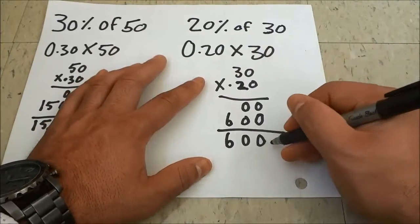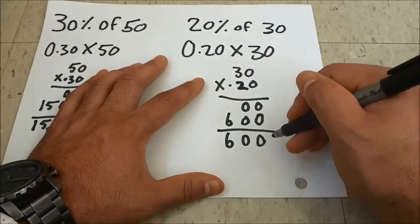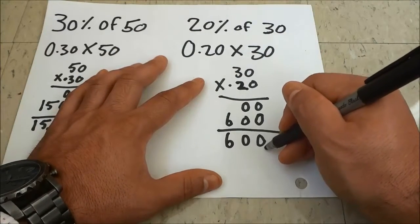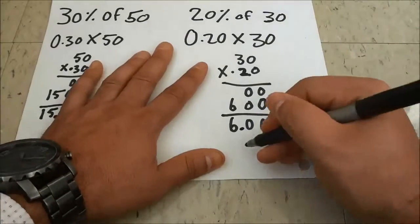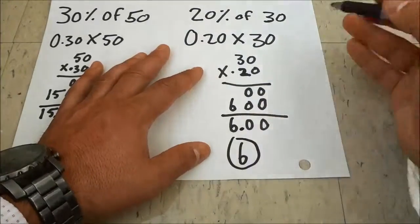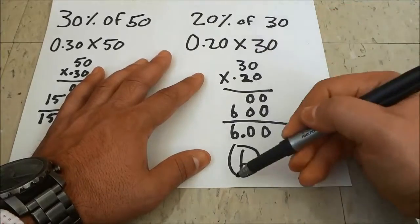I'm going to take the imaginary decimal and move it two spaces from the right. My final answer is 6. 20% of 30 is 6.